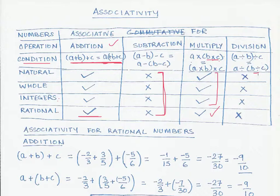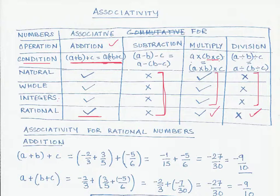For division, natural numbers, whole numbers, integers, and rational numbers are all not associative. There is a clear pattern: all four number types follow the associative property under addition and multiplication, but do not follow associativity for subtraction and division. This means when dealing with subtraction and division we must be careful about how we group numbers, whereas for addition and multiplication the grouping does not matter. In the next video we will prove associativity for rational numbers under these four operations.